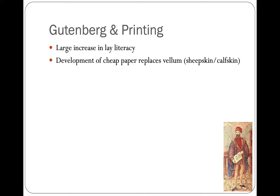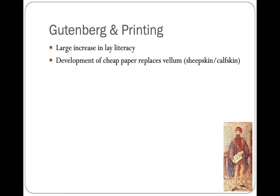Another key factor in why the printing press will be so impactful is the development of new, cheap paper. If paper is cheap, it's a lot cheaper to print books, and more people are able to purchase them. This replaces vellum — sheepskin and calfskin — which was more expensive. So we're going to see the printing press lead to a greater abundance of books available.